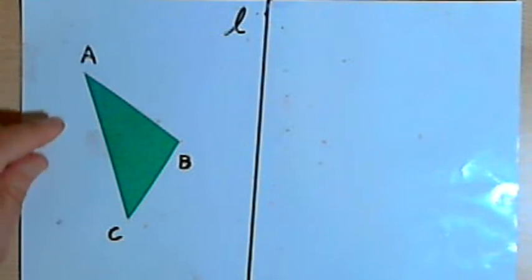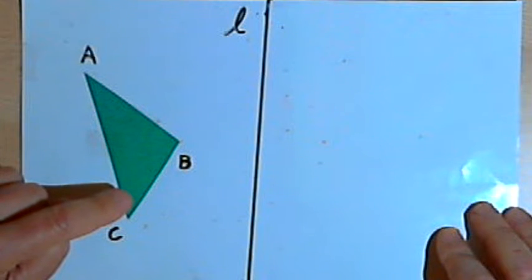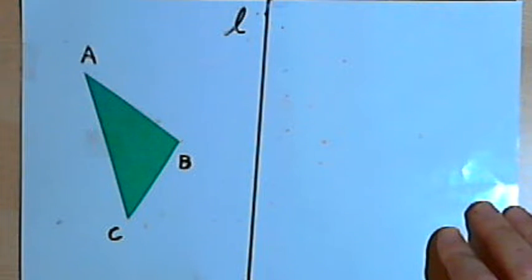So the image I'm going to use is triangle ABC, this green triangle, and I'm going to reflect that in line L. So here's how we do it.